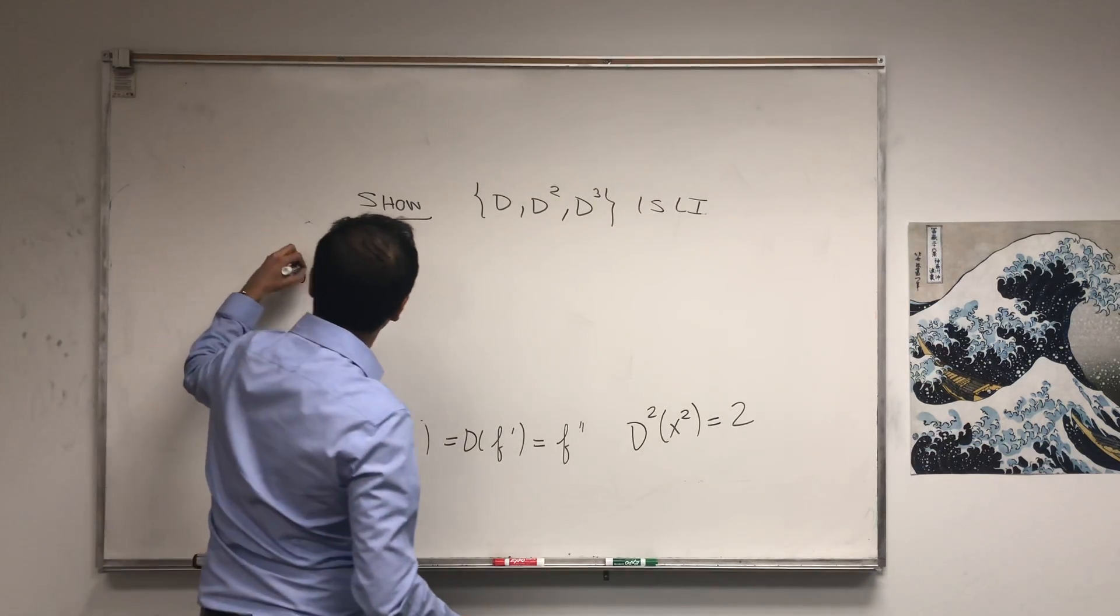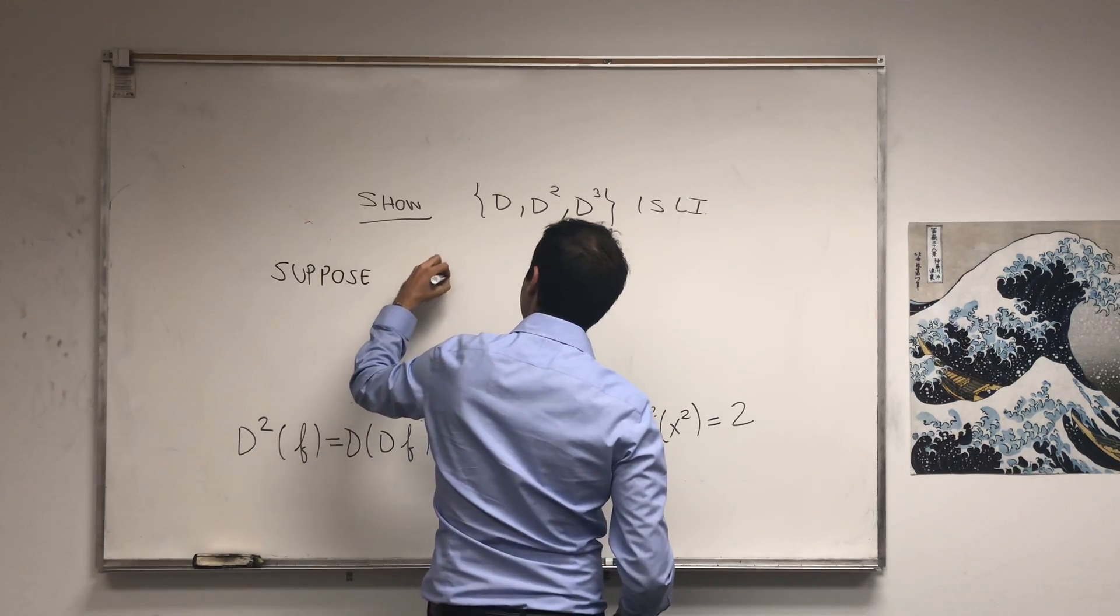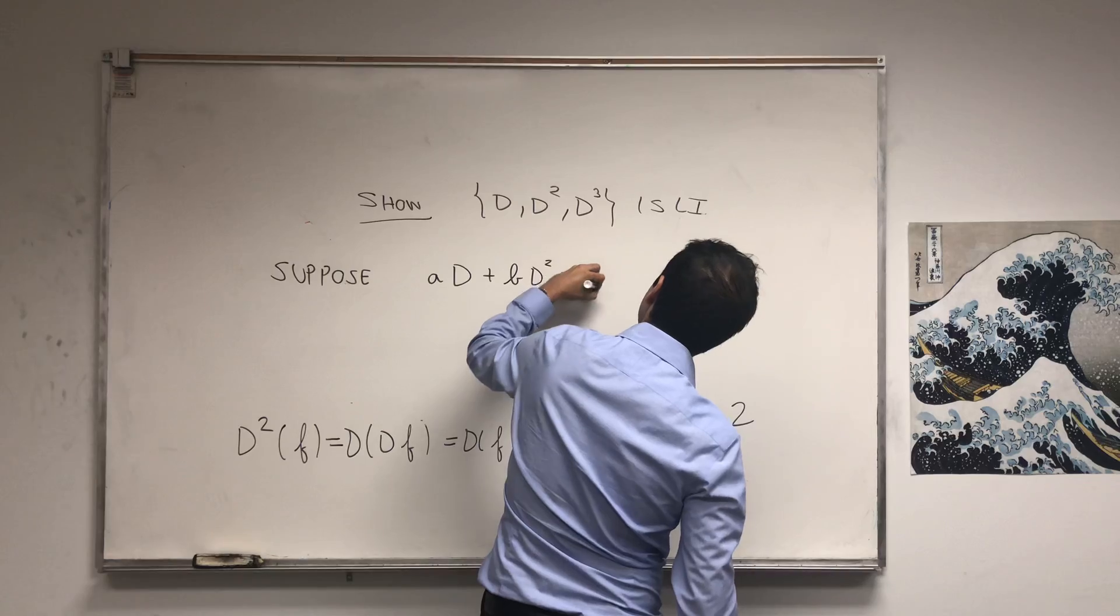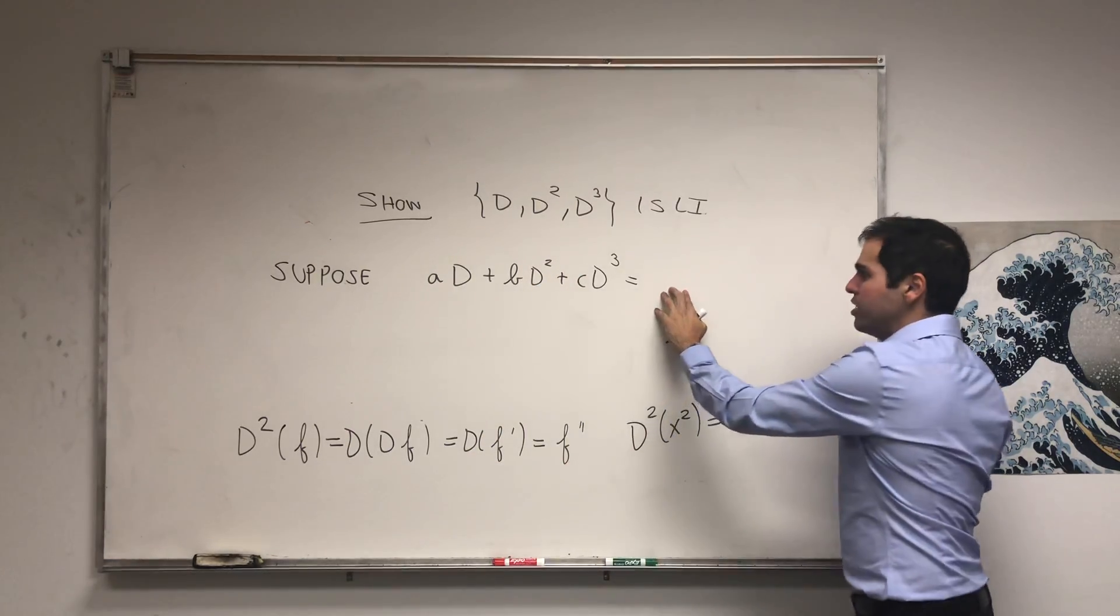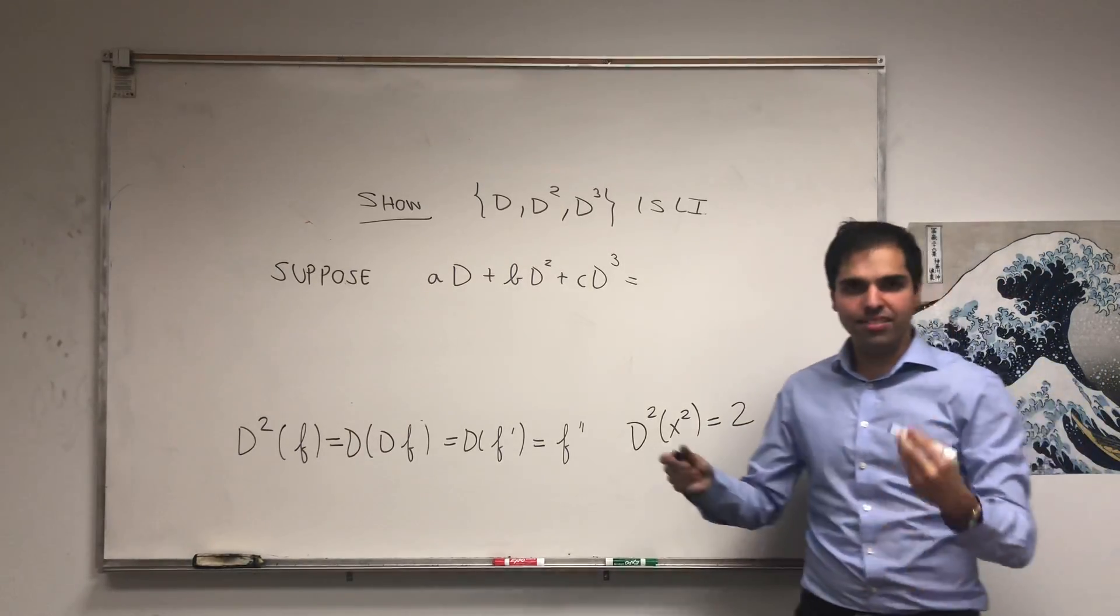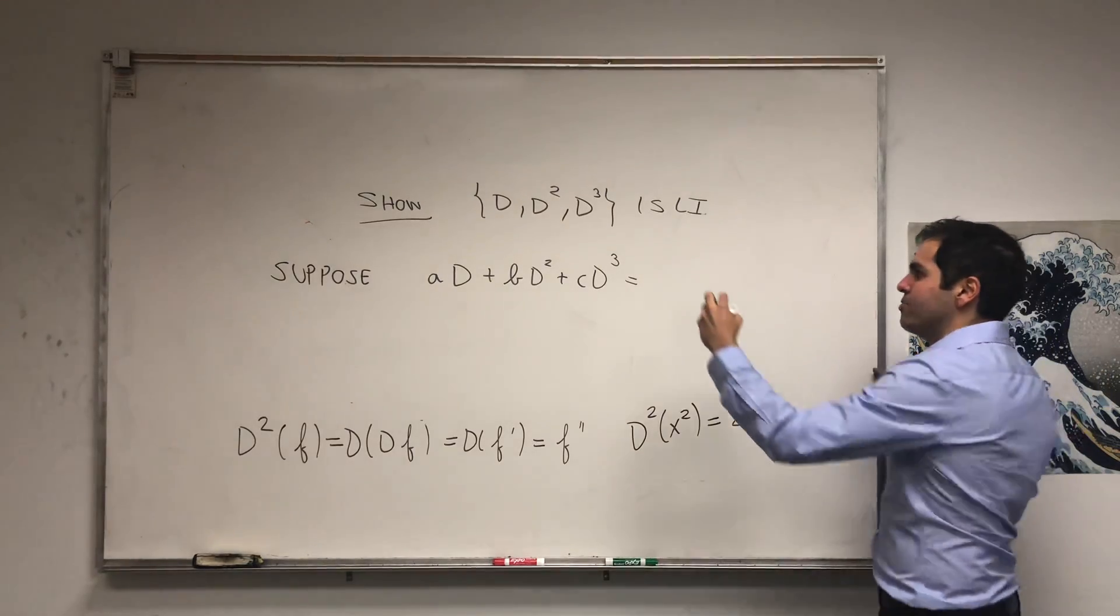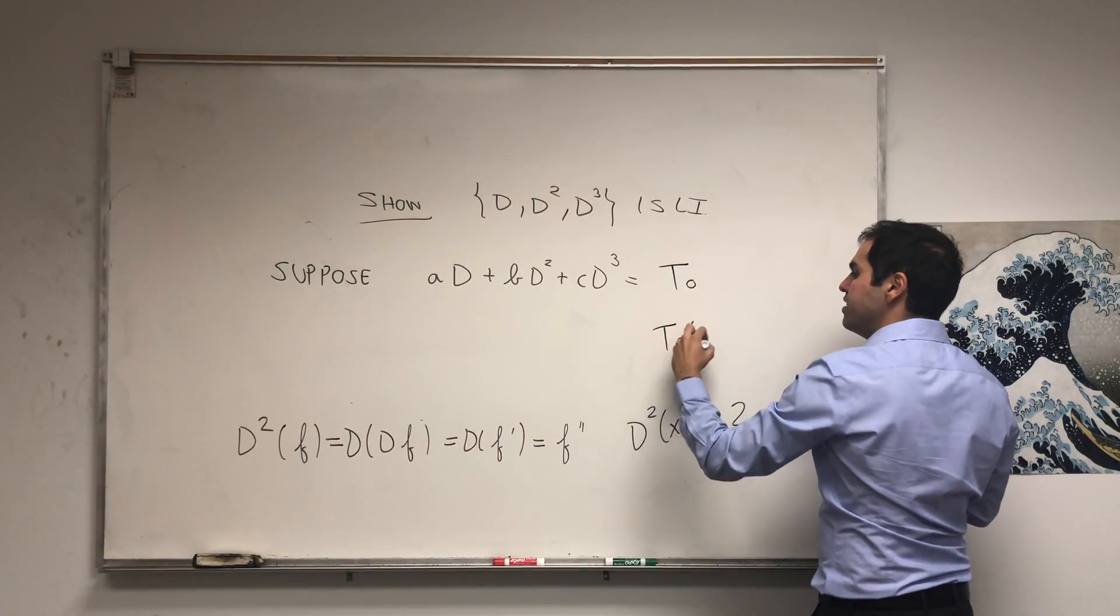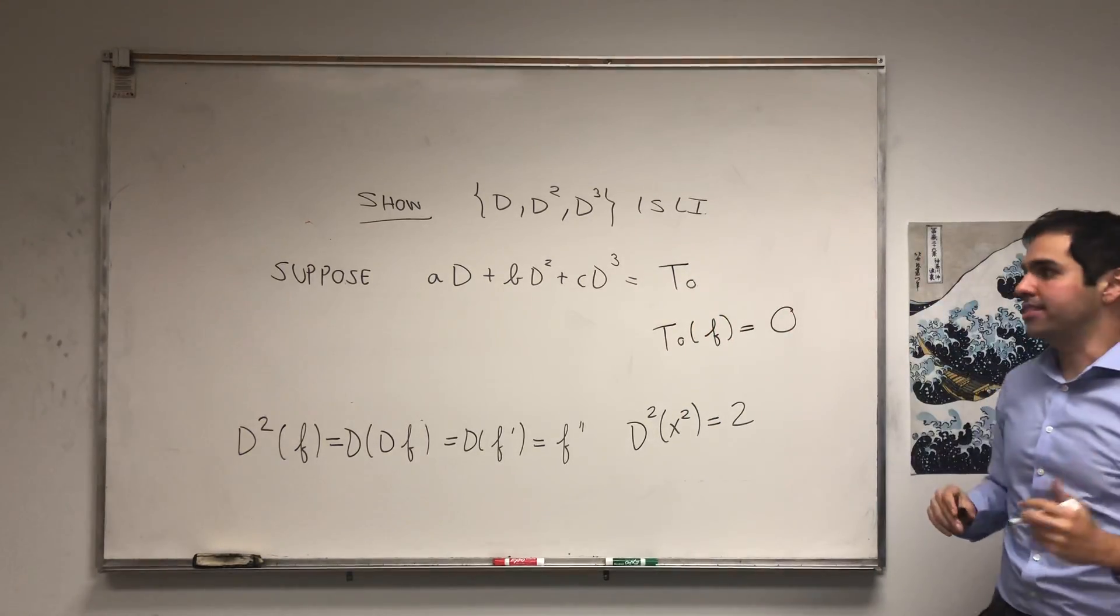All right, how do you show this? So suppose aD + bD² + cD³ equals... what? So usually you see the zero vector, but in this case you always have to ask yourself, what is the zero vector here? It's the zero transformation that I like to call T₀, and what T₀ does is takes a function and just spits out the zero function.